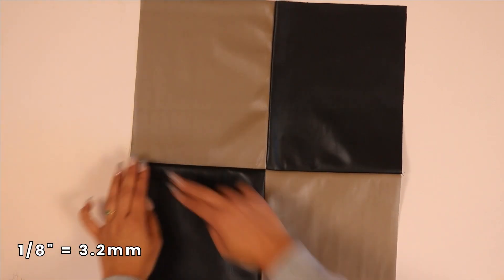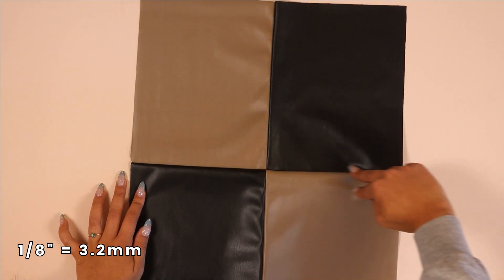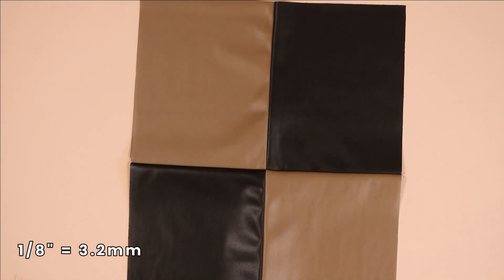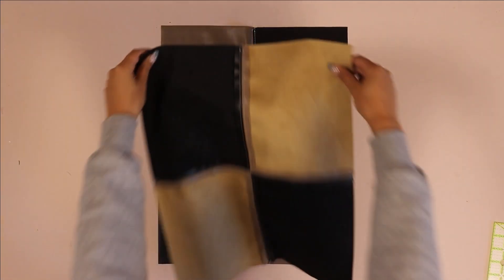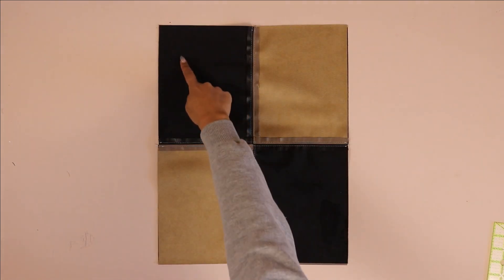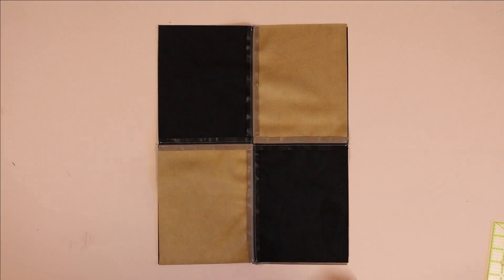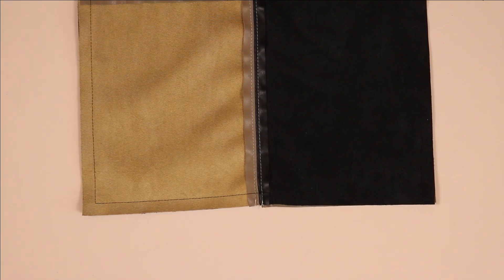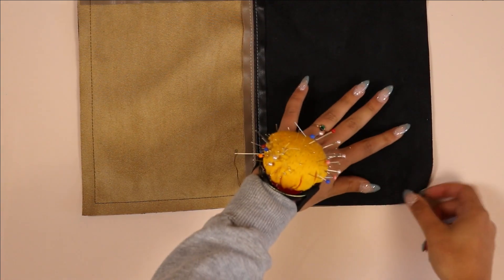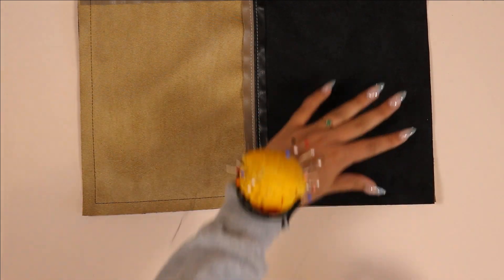We're going to top stitch down both of those seam lines on either side, about an eighth of an inch away from the seam. Again, make sure the seam allowances are pressed open. I also use a more heavy-duty top stitching thread. Then repeat this entire process for the other side of the bag. When you have that, place both sides of the bag right side together and sew along both sides and the bottom.